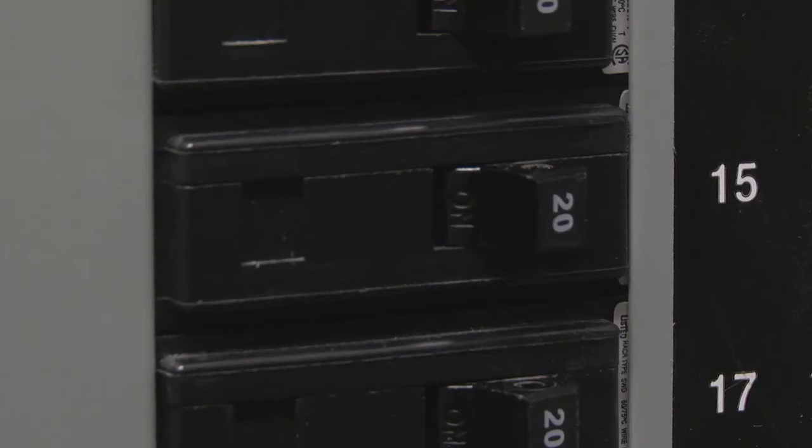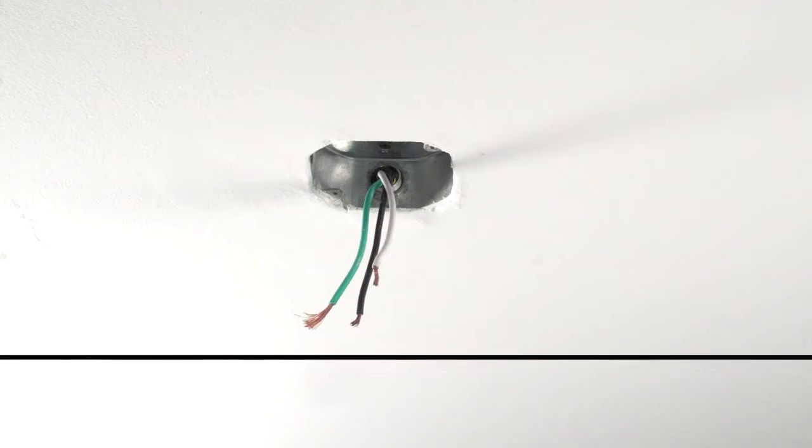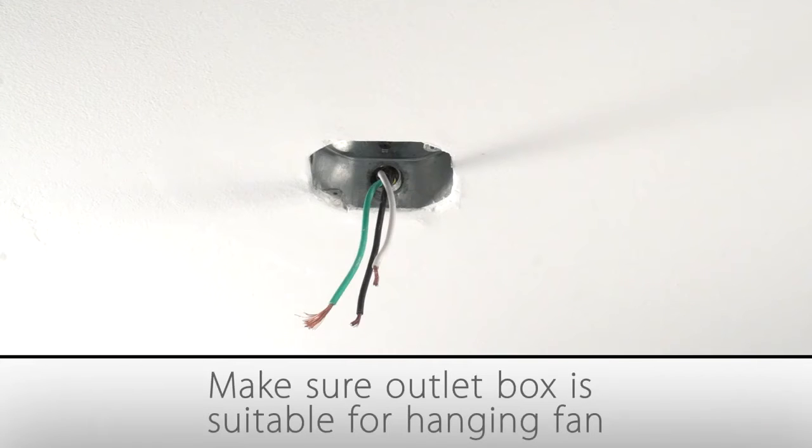Next, turn off the power to the location of the outlet box where you want to install your fan. Make sure that the outlet box in your ceiling is suitable for fan support. If there isn't an outlet box where you'd like to install your fan, one must be installed on a ceiling joist or beam and be properly wired.